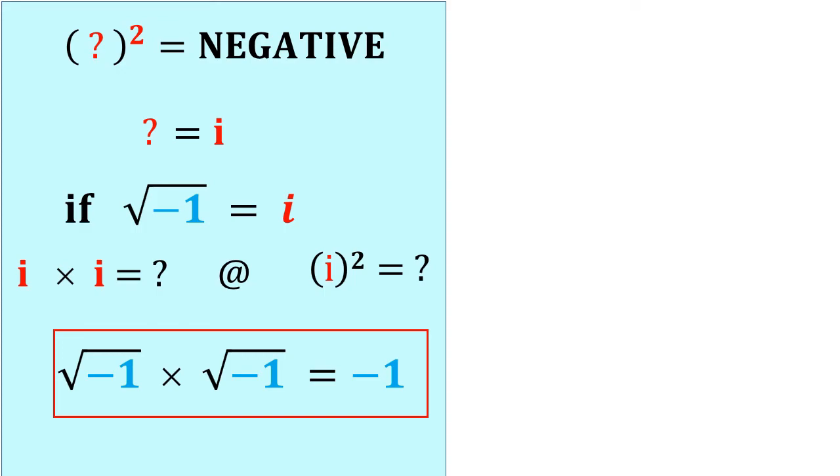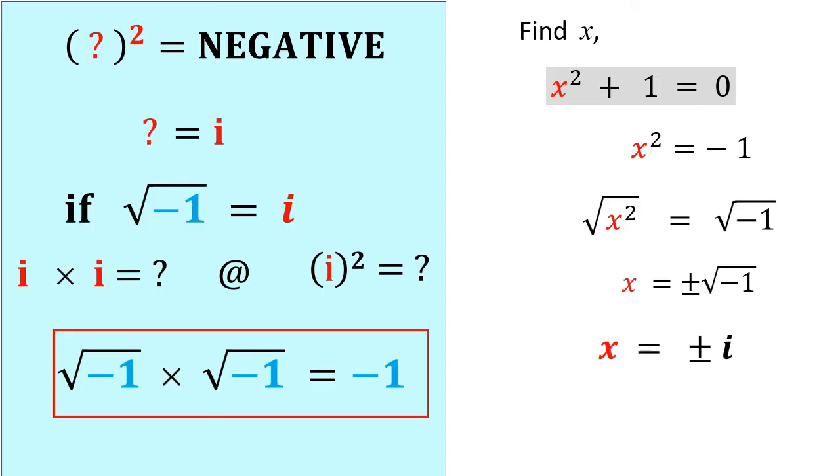We got a negative number by squaring a number. And the other question was, can you find a solution to x² + 1 = 0? The answer is yes. Transposing 1 to the right hand side, we get x² = -1. Taking the square root on both sides, we will get the value of x as plus or minus √-1. That is x = ±i.